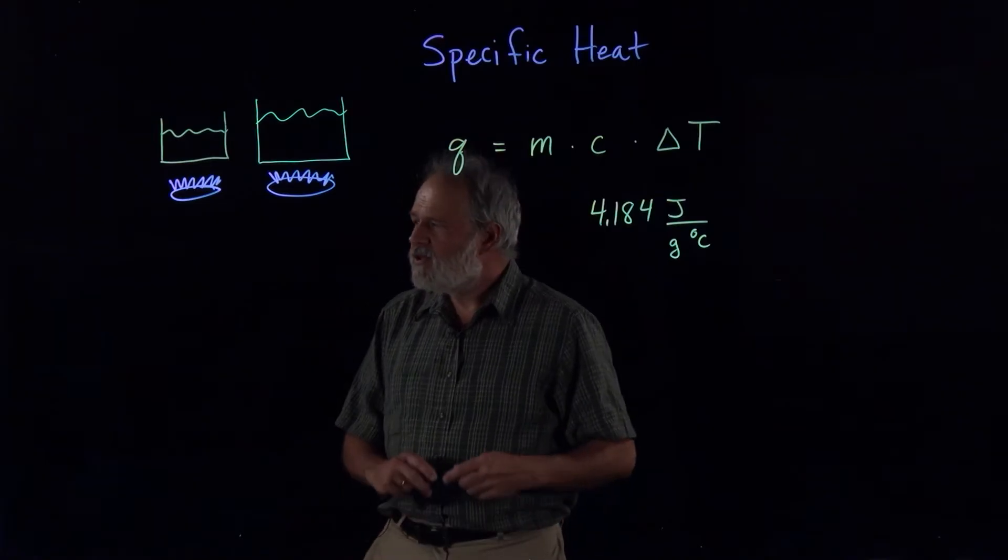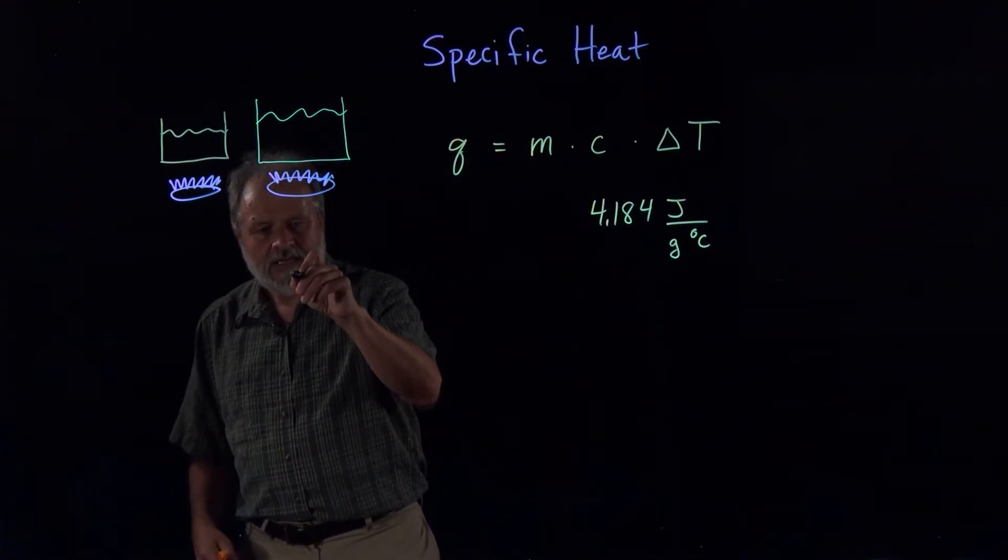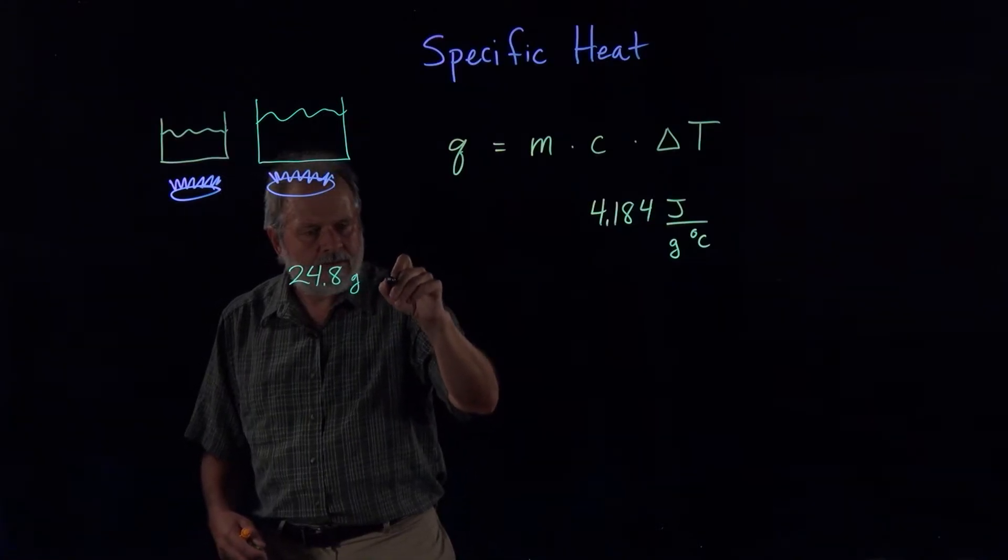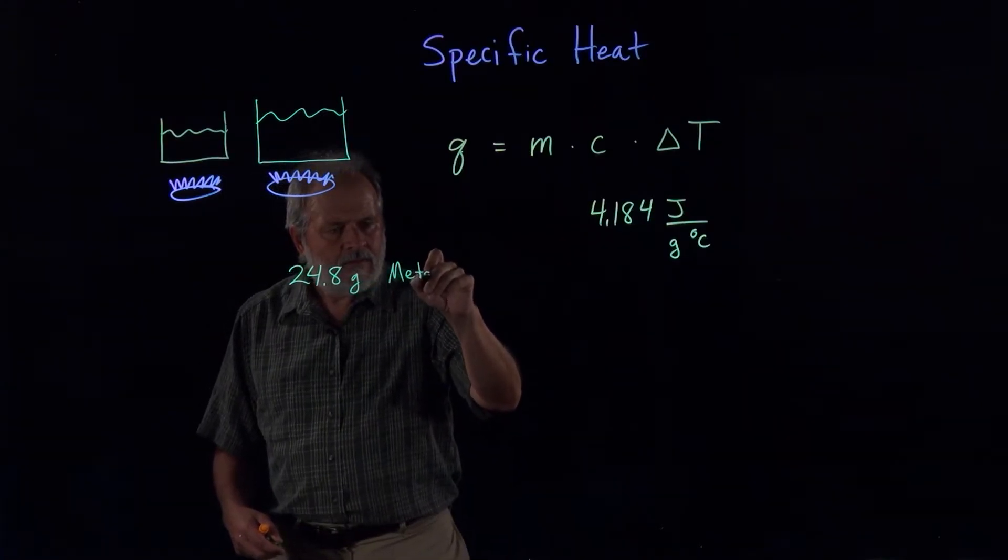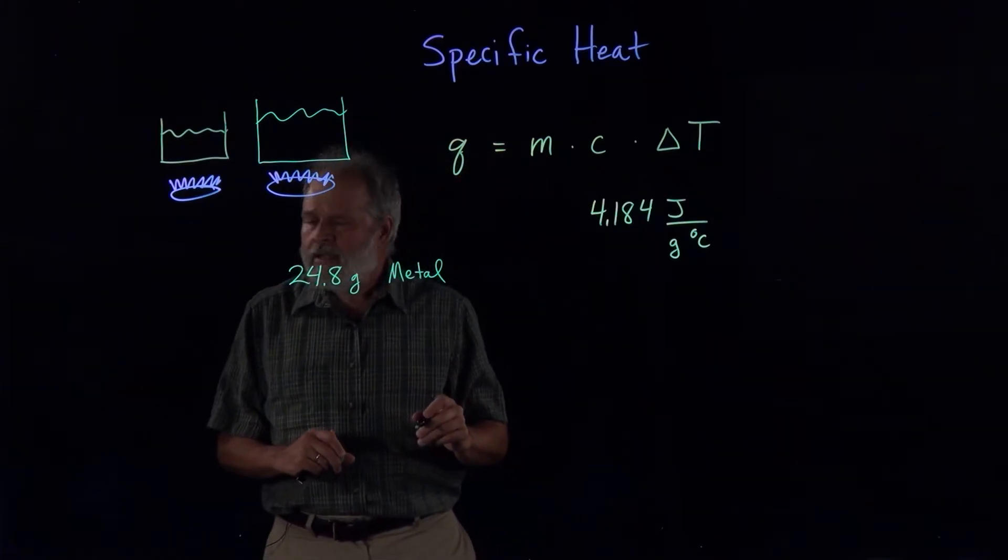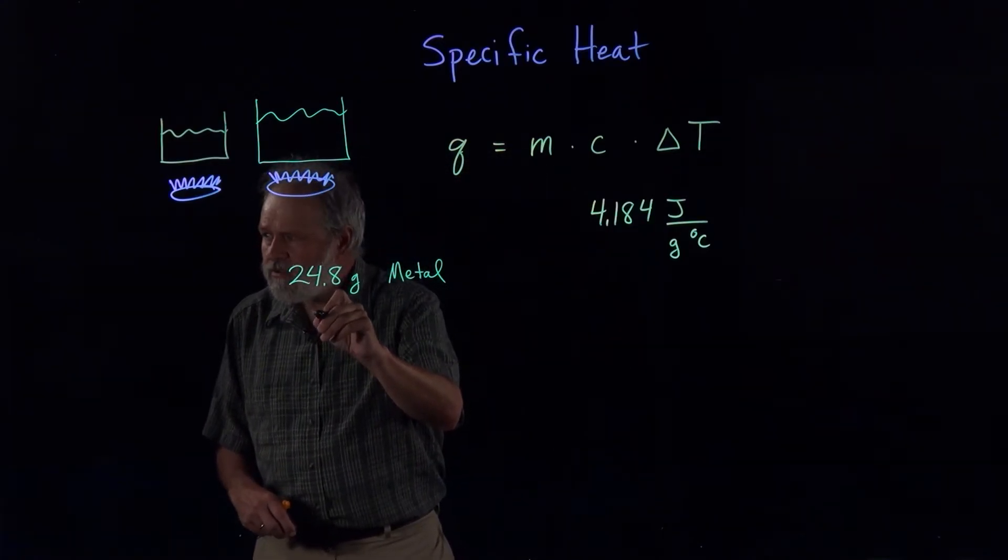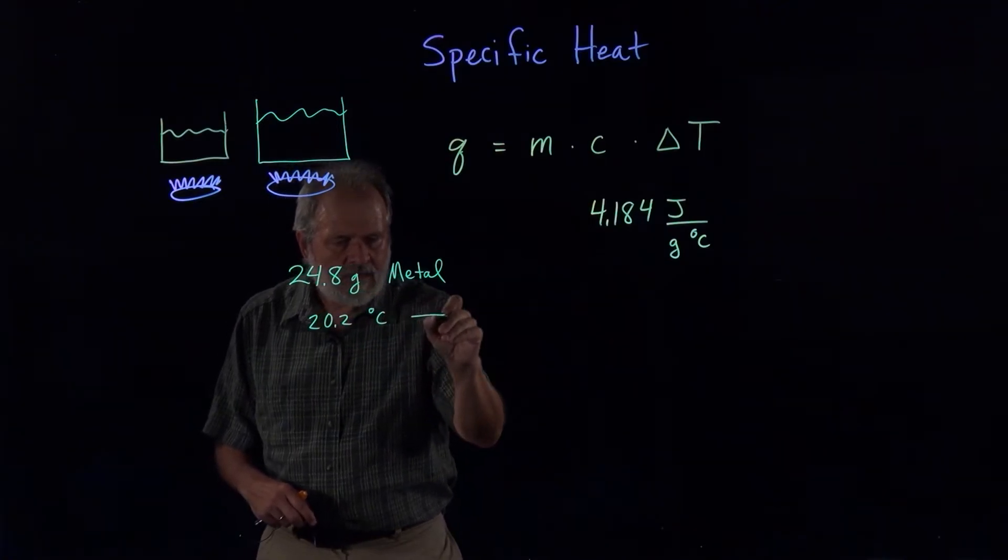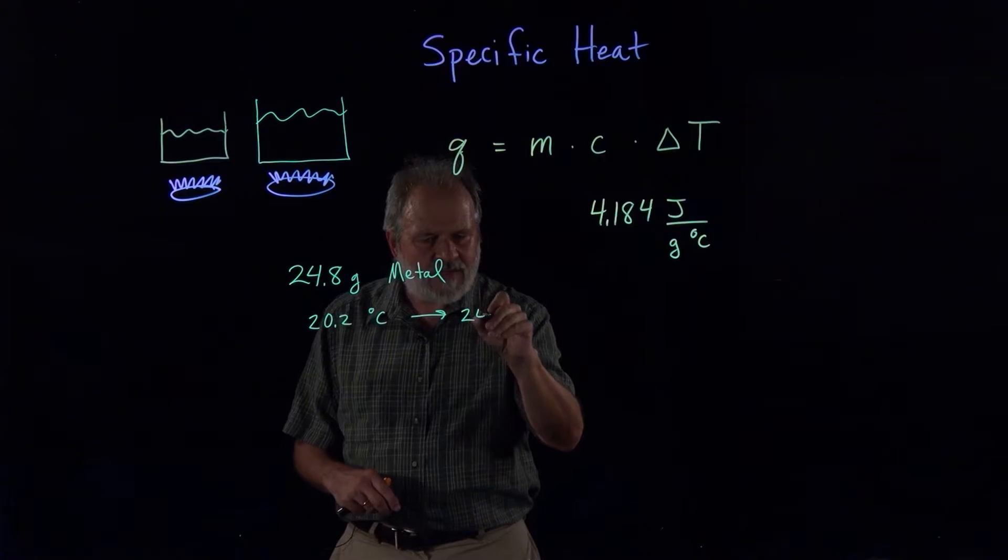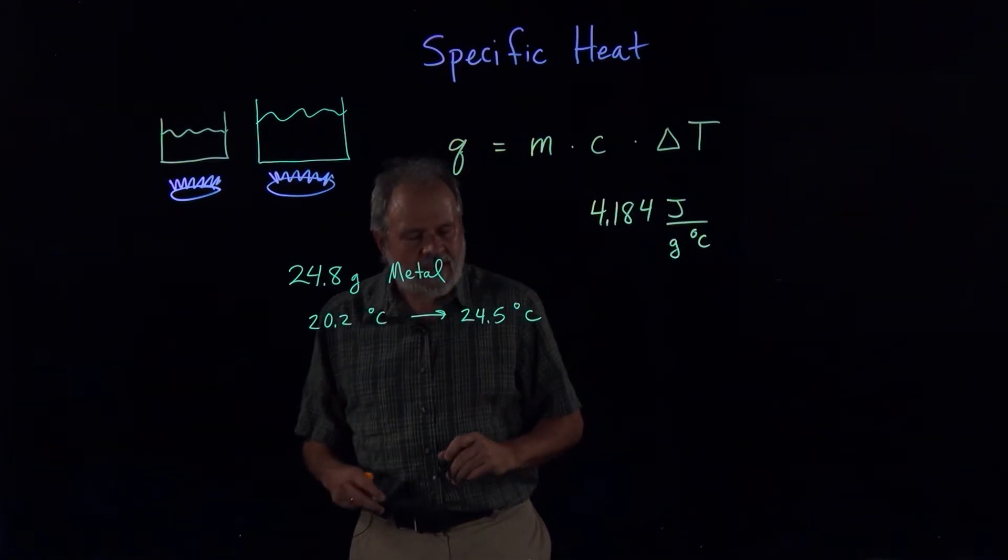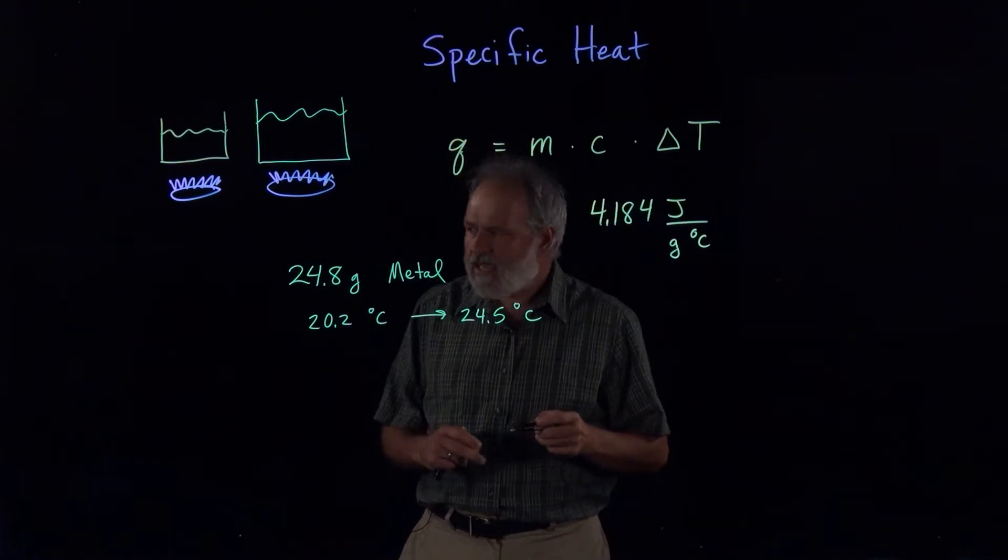So the problem we're going to do, if we have a 24.8 gram piece of metal, and we're going to guess what this metal is in a bit, and the change in temperature goes from 20.2 degrees C up to 24.5 degrees C.